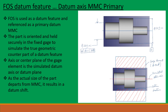FOS Datum Feature Datum Axis at MMC Primary. In this case, FOS is used as a datum feature and referenced as primary datum at MMC. The part is oriented and held securely in the fixed gauge to simulate the true geometric counterpart of the datum feature. The axis or center plane of the gauge element is the simulated datum axis or datum plane. As the actual size of the part departs from MMC, it results in a datum shift. Here again, this diameter is datum A and is specified with a position tolerance of 0.1 with respect to A at MMC. The part will be held in a fixed gauge element and the simulated axis of this fixed gauge element is the simulated datum axis.